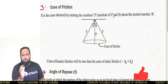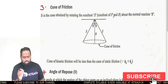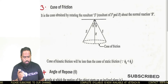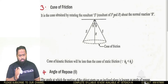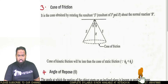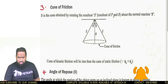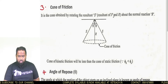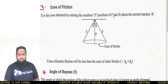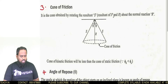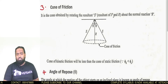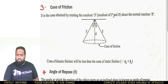The next core topic of friction covers basic concepts: the angle of friction and the coefficient of friction. The coefficient of friction is mu, which equals f divided by r, and the angle of friction is psi.